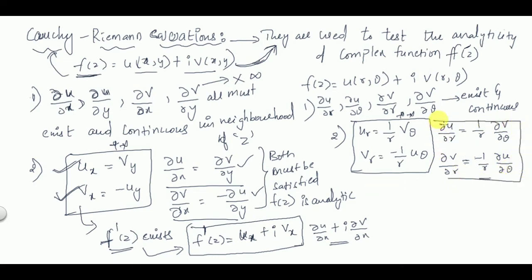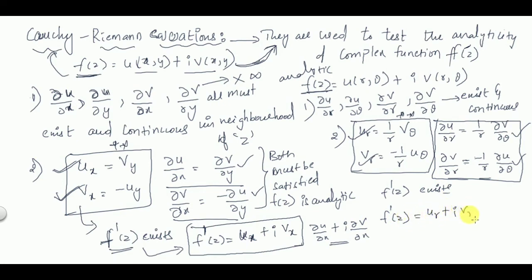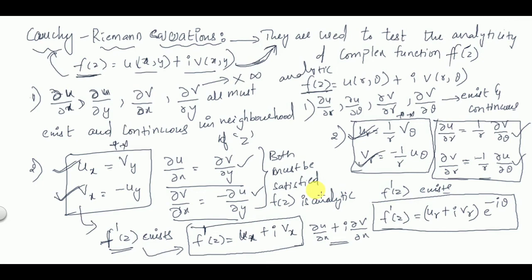These two equations are the Cauchy-Riemann equations for a function to be analytic in polar form. Both conditions must be satisfied; if even one is not satisfied, it is not analytic. If both are satisfied, f'(z) exists and is given by f'(z) = (uᵣ + i·vᵣ)·e^(−iθ). We will solve problems in the next video so you can understand Cauchy-Riemann equations and analyticity very clearly.